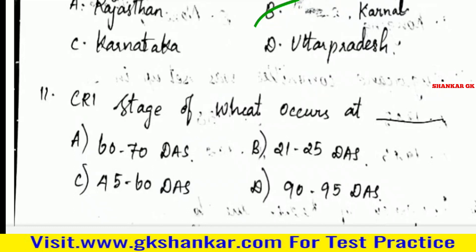Eleventh question: RI stage of wheat occurs at — A. 60 to 70 days, B. 21 to 25 days, C. 45 to 60 days, D. 90 to 95 days after sowing. Answer: B. 21 to 25 days.